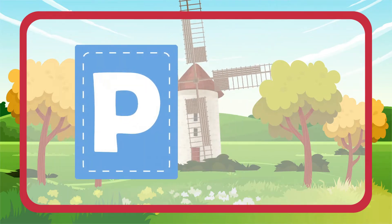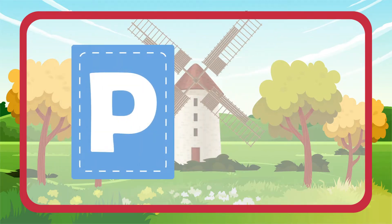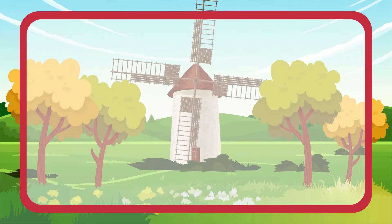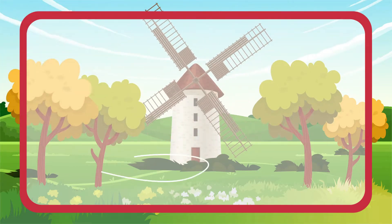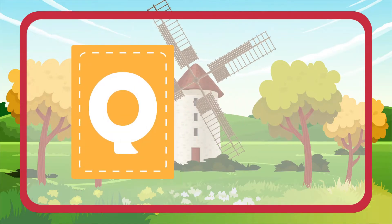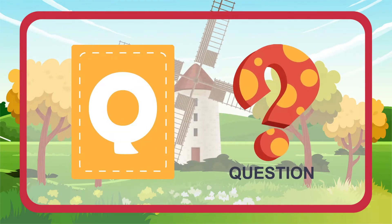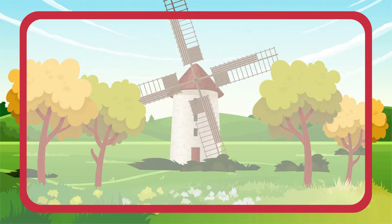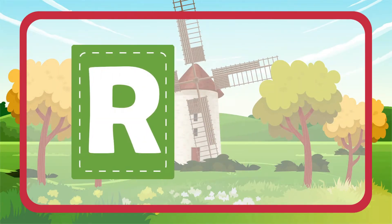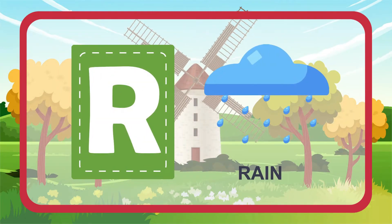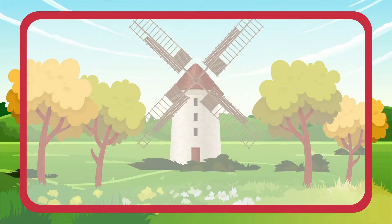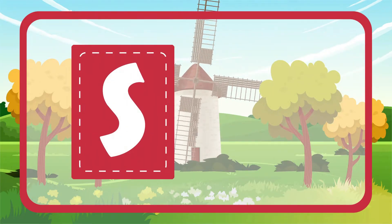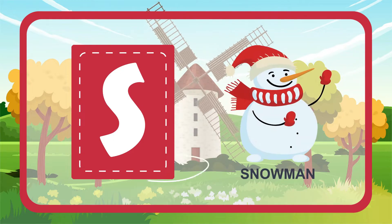P is for Popcorn. Q is for Question. R is for Rain. S is for Snowman.